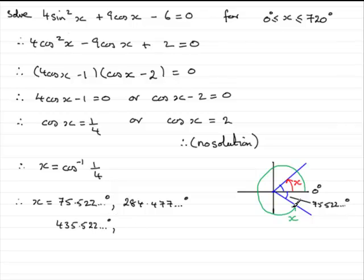And the same applies to this green x. All you've got to do is go round another complete 360 degrees. So you could add 360 degrees to 284.477 and what you'll get is 644.477 and so on degrees.